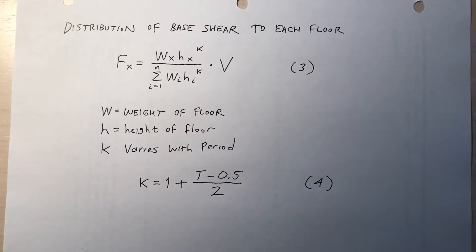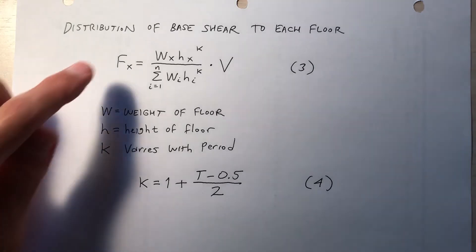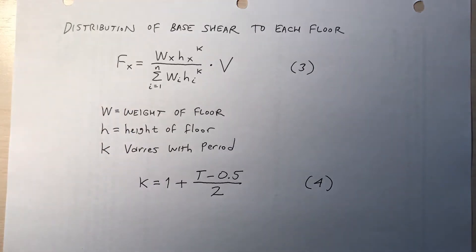I_E would be the importance factor. Once we know the base shear, we distribute it to each floor according to this formula, which I call equation 3, F_X. The force applied to the X floor is W_X times H_X to the K, divided by the summation as I goes from 1 to N floors of W_I, H_I to the K power times base shear V. W is the weight of the floor, H the height of the floor, K is one plus period minus one half divided by two.